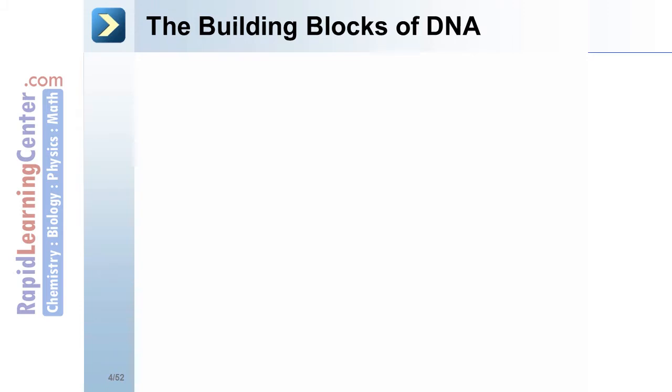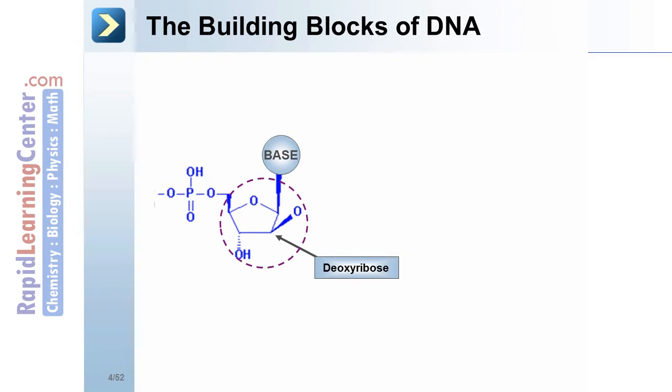The building blocks of DNA. This is a deoxyribose. It's a five-sided sugar. The nucleoside consists of a sugar and the base. This is a nucleoside. A nucleotide consists of the nucleoside plus a phosphate group. There can be one, two, or three phosphate groups.